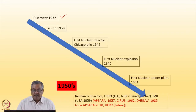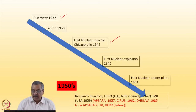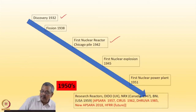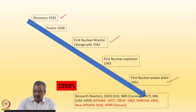Very quickly, the first nuclear reactor was built under a basketball court at the University of Chicago, known as the Chicago Pile. Then came the first nuclear explosion, the atom bomb, and the dropping of atom bombs on Hiroshima and Nagasaki. But very quickly after discovery, nuclear power plants came, and also research reactors.